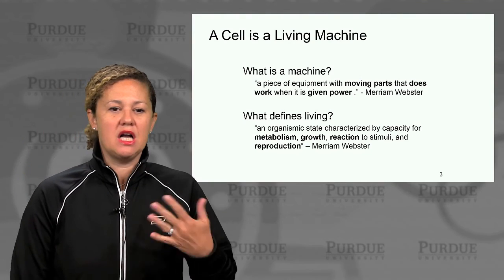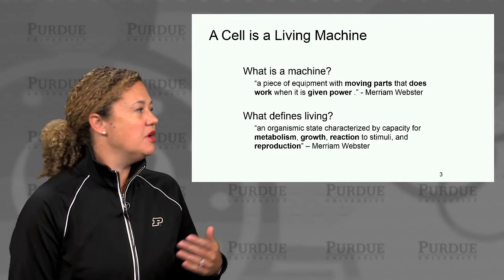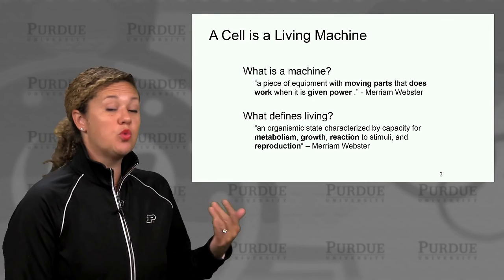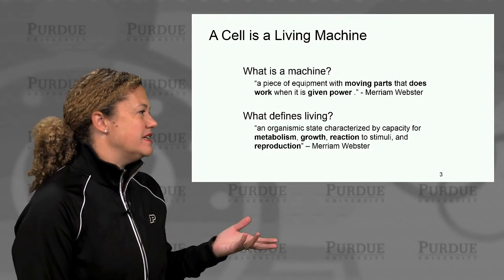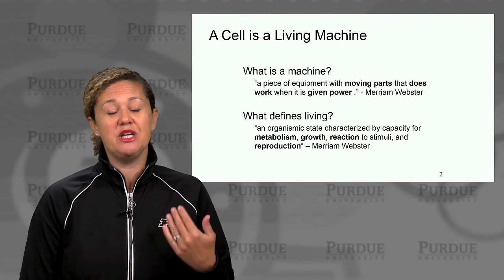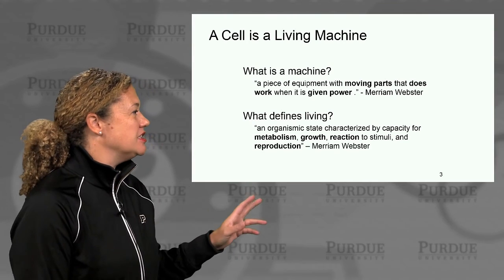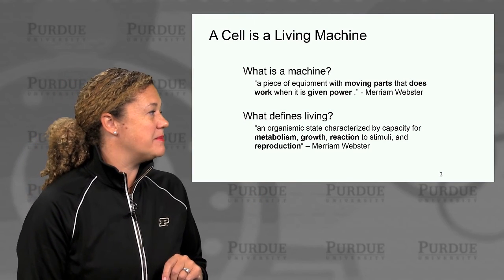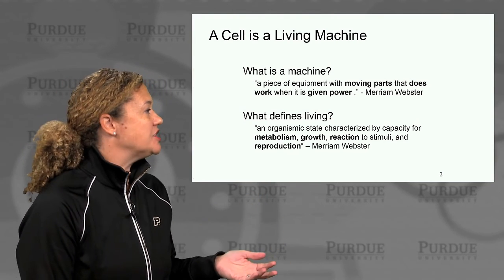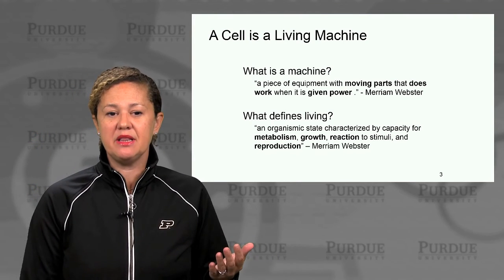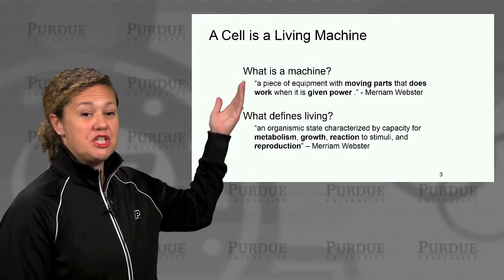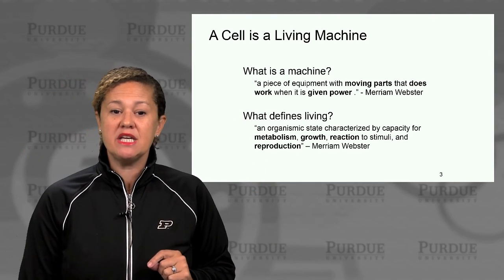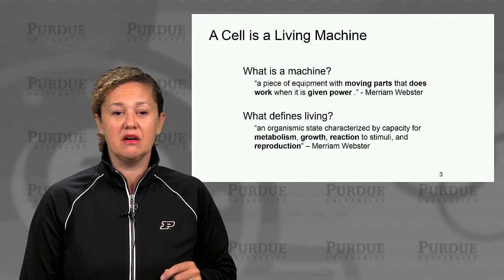Let's look at a common definition of a machine. Merriam-Webster tells us that a machine is a piece of equipment with moving parts that does work when it's given power. What defines living? The definition of life is actually quite challenging and there are many ways to go about it. Merriam-Webster says: an organismic state characterized by capacity for metabolism, growth, reaction to stimuli, and reproduction. It turns out there's a lot more in common between these two definitions than what might appear on the surface.